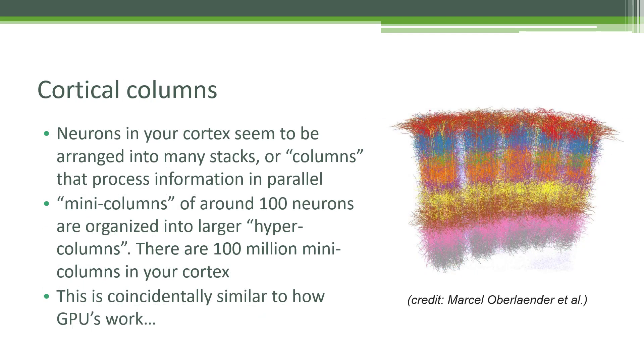If we look deeper into the biology of your brain, you can see that within your cortex, neurons seem to be arranged into stacks or cortical columns that process information in parallel. Each one of these columns is made of mini columns of around 100 neurons per mini column that are organized into larger hyper columns. Within your cortex, there are about 100 million of these mini columns.